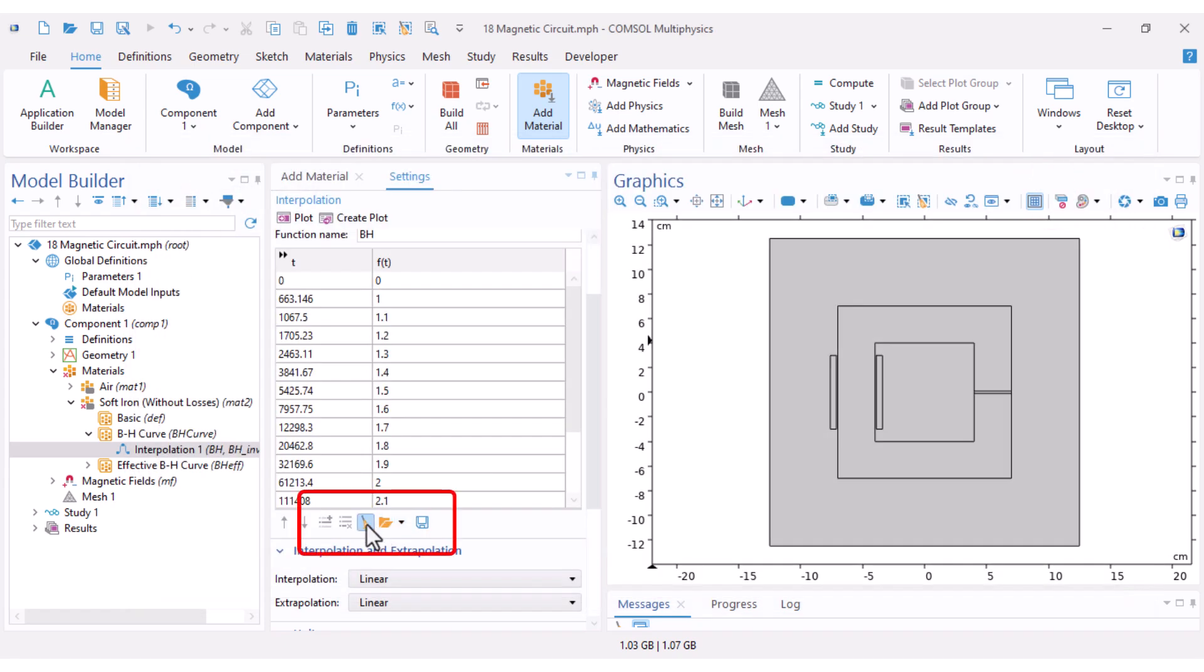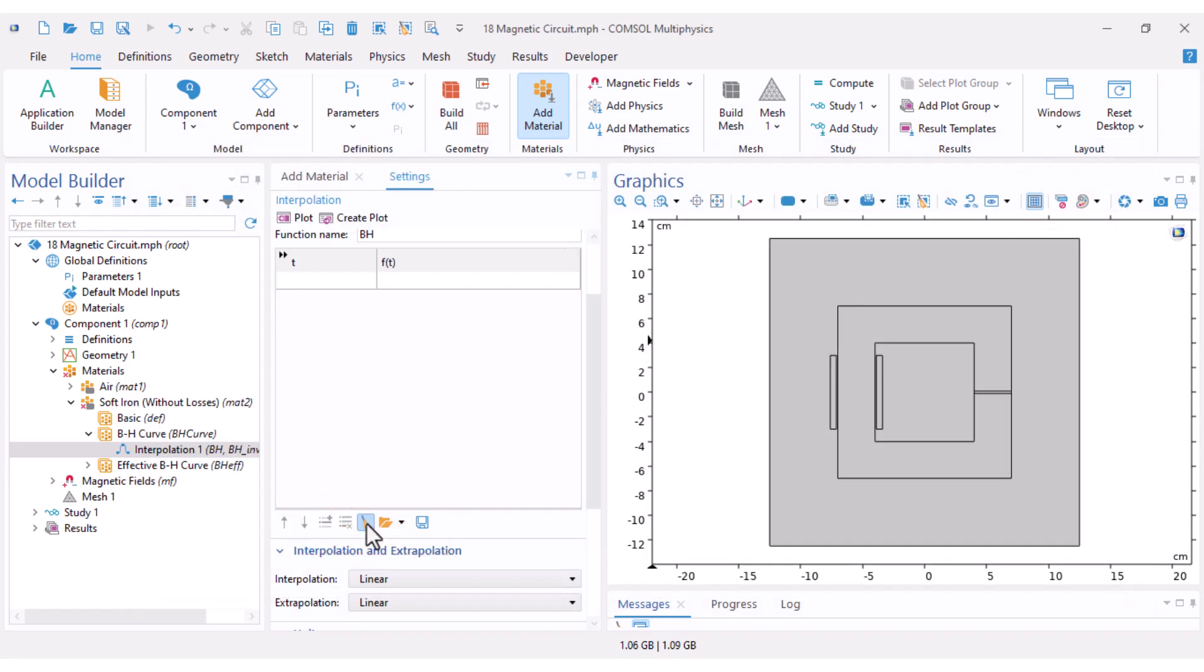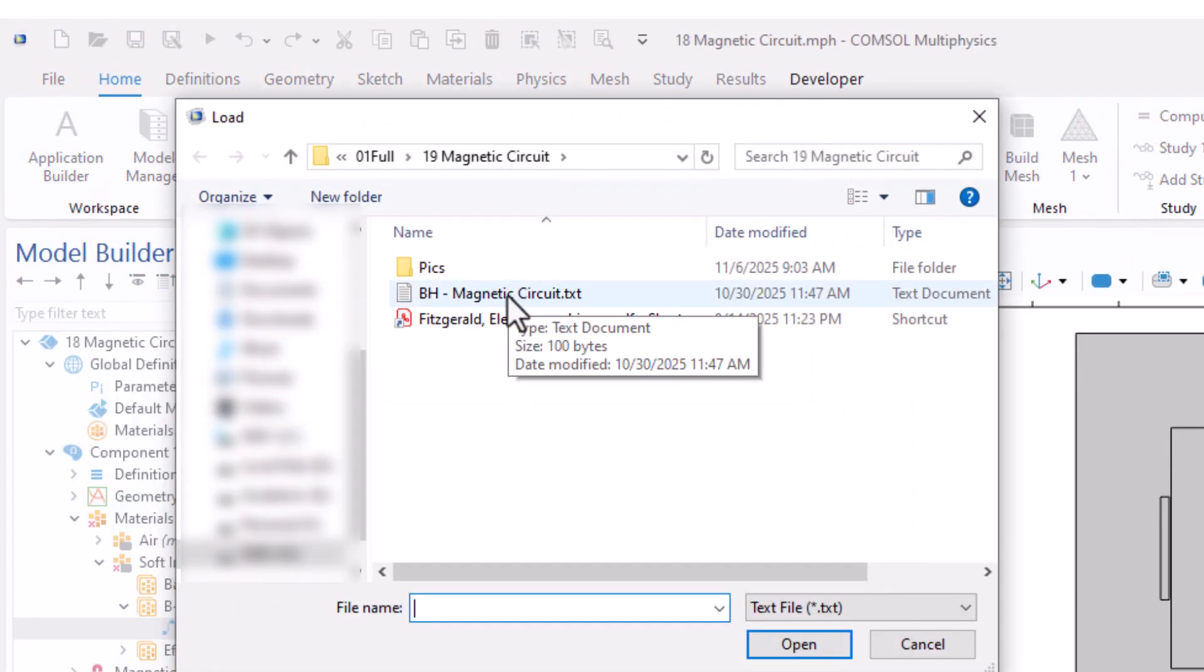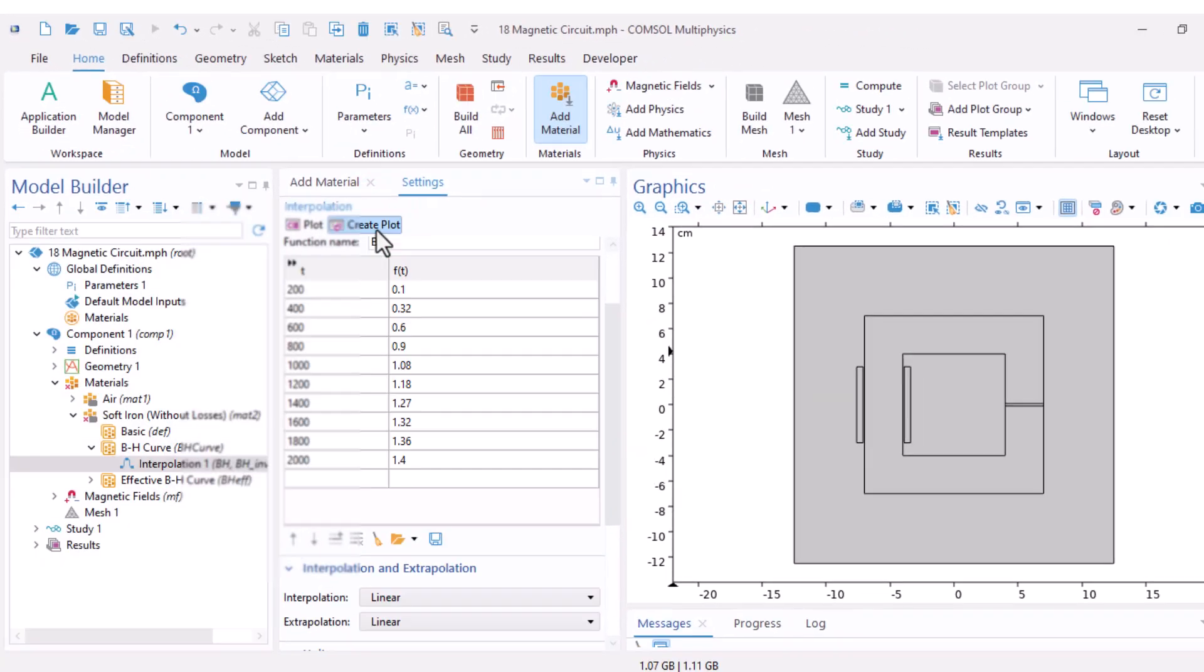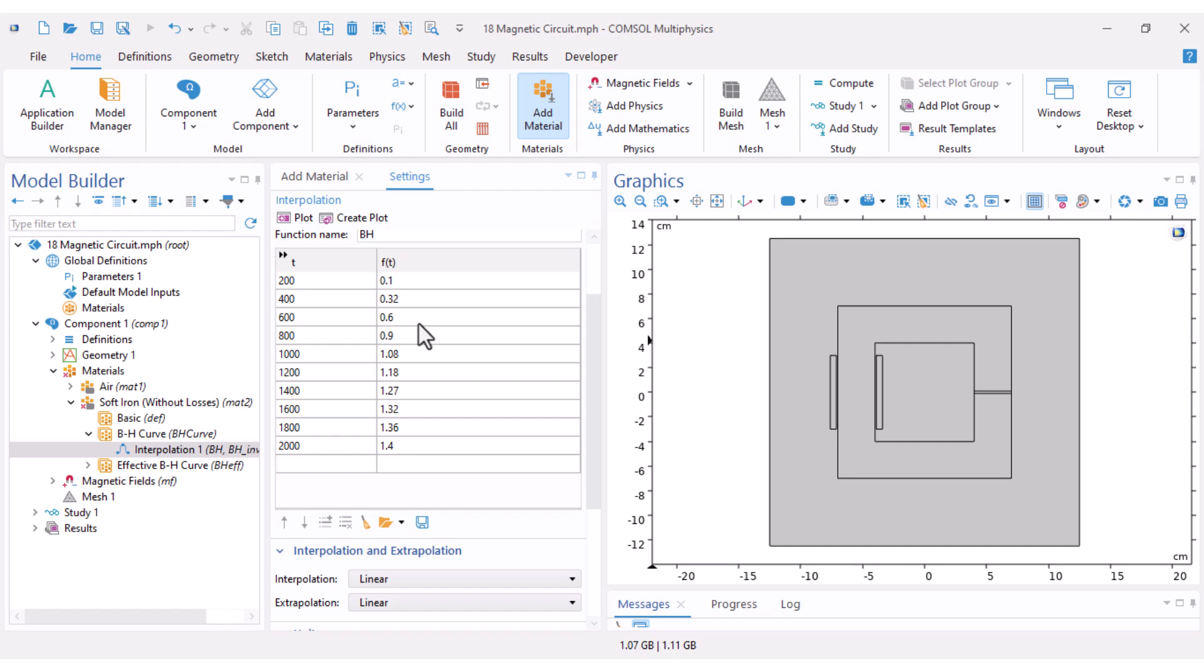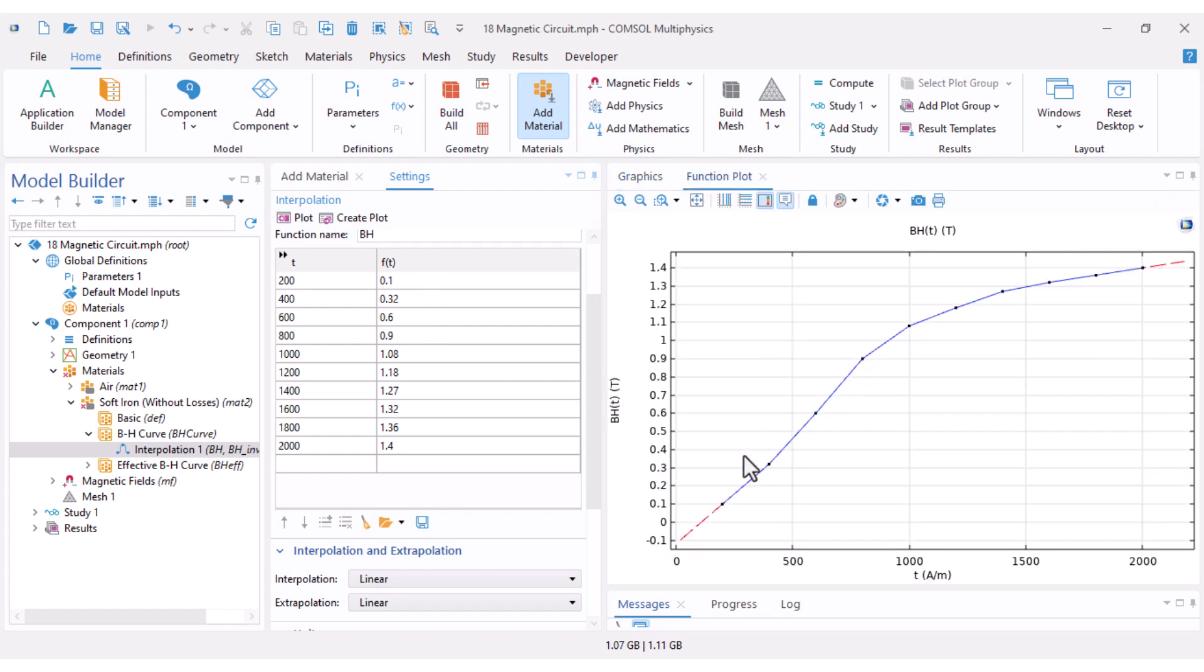To fix that I have created a text file that contains the non-linear characteristics table from our problem. The left column is H in ampere per turn and the right column is B in tesla. Now we'll import it into COMSOL. First click Clear to empty the current table, then click Load from File and select the BH magnetic circuit file.